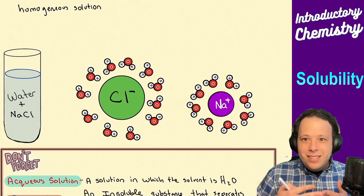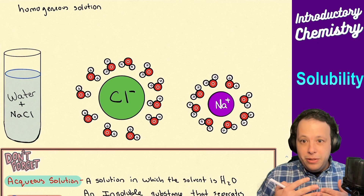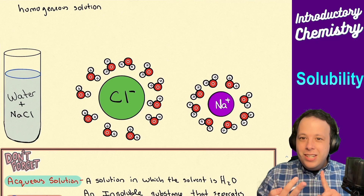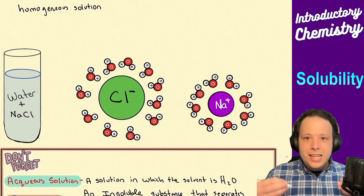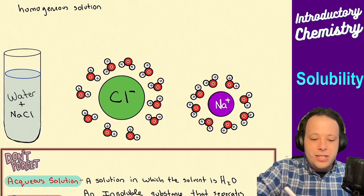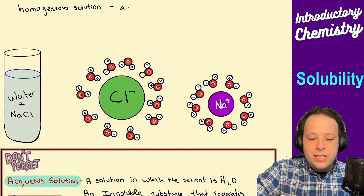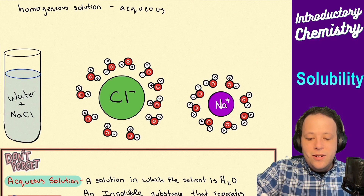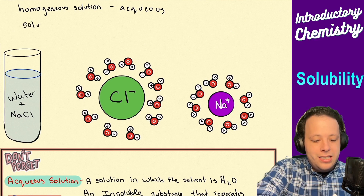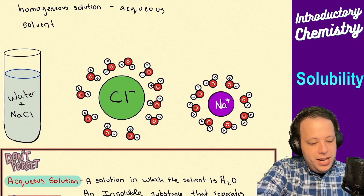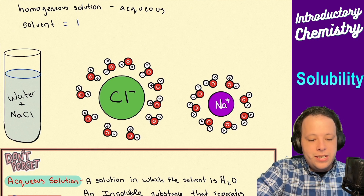In the solution, we can label a couple of different things. It's made of water and salt, so this is what we refer to as an aqueous solution. Aqueous means the solvent is water — the solvent in this case is H2O.